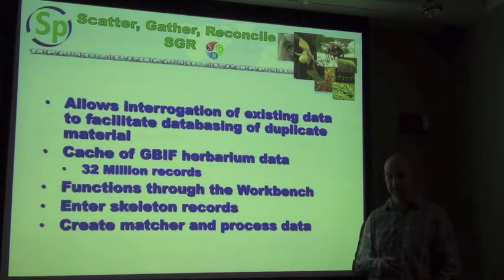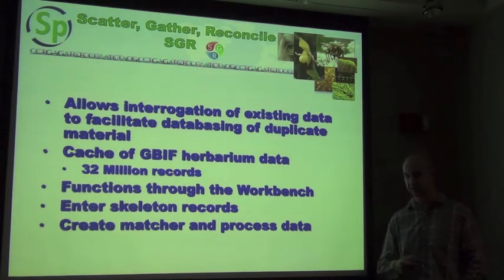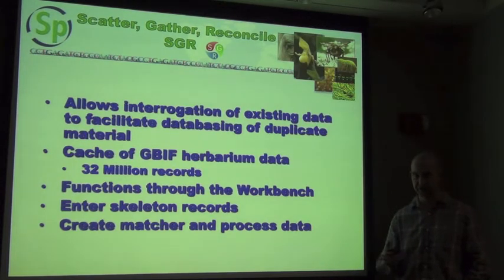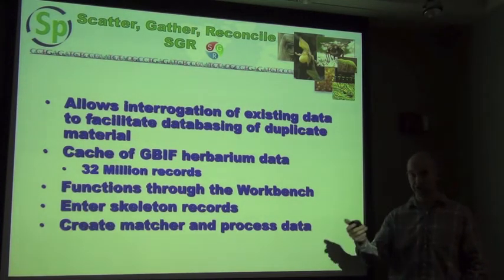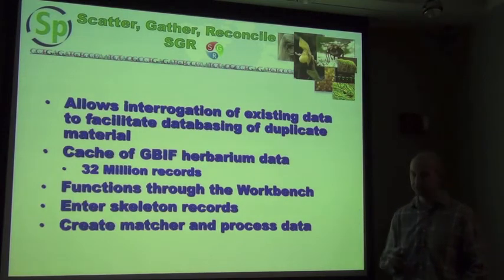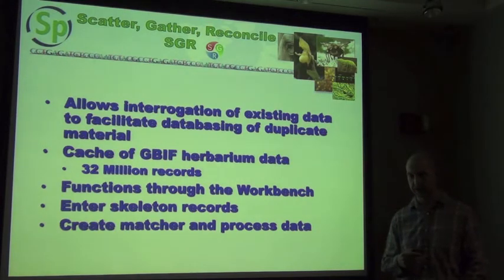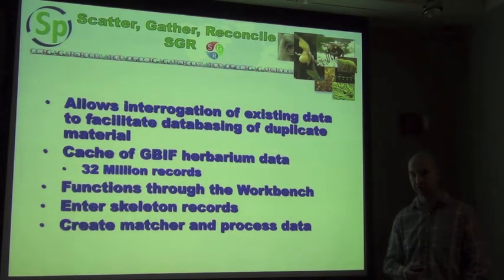The ScatterGather Reconcile is a mechanism built into Specify that allows you to database specimens in your collection based on other specimens that may have been databased already from another collection. For instance, if you're a small collection sending duplicate herbarium sheets to other museums and they database those sheets faster than you can, you could use their information to database your own specimens. We've built a cache here at KU of all the GBIF herbarium data — about 32 million records and growing — and allow you to use skeletal records in your system to interrogate against that cache and pull data from existing records to augment and catalog your specimens more efficiently.